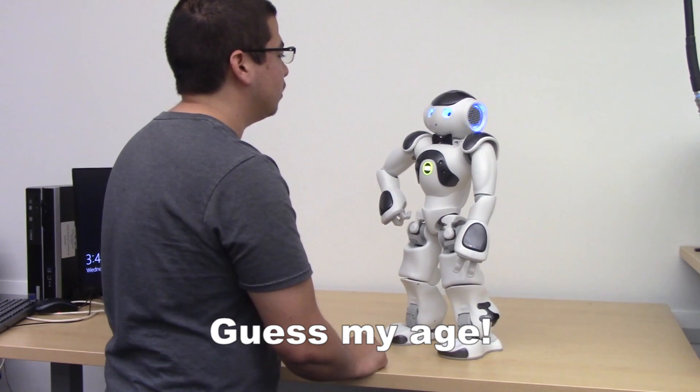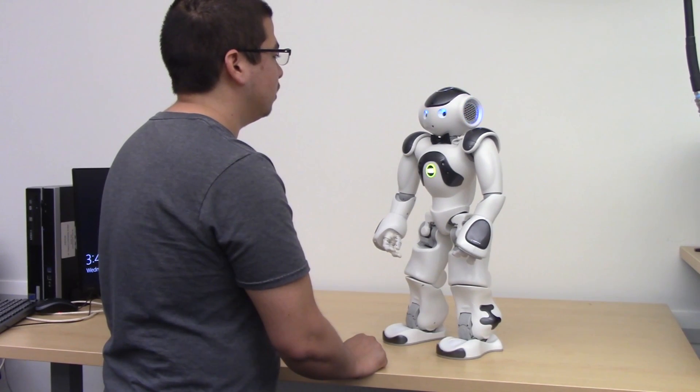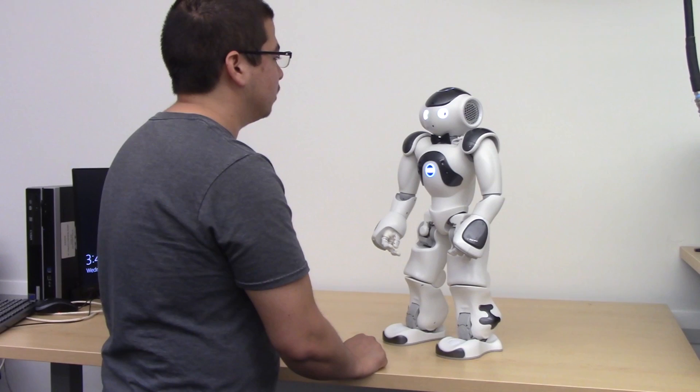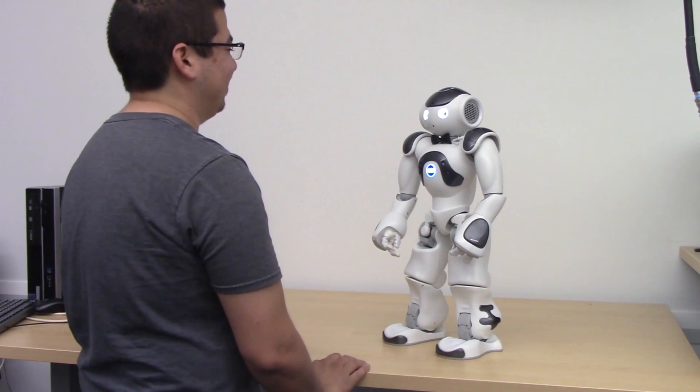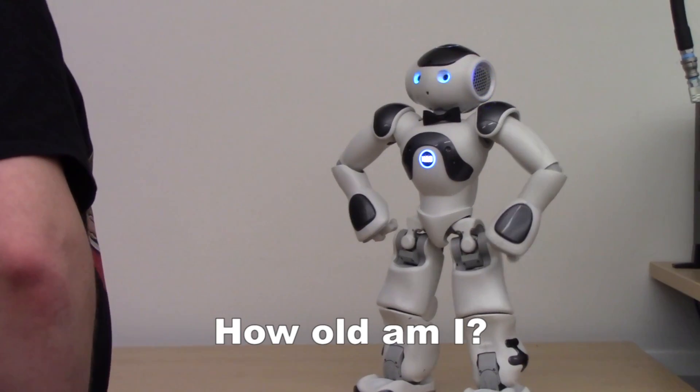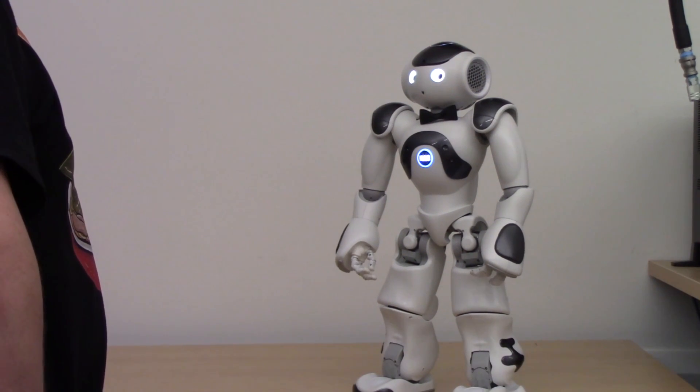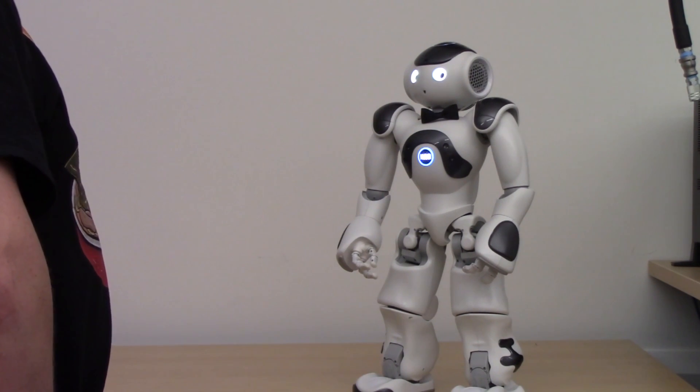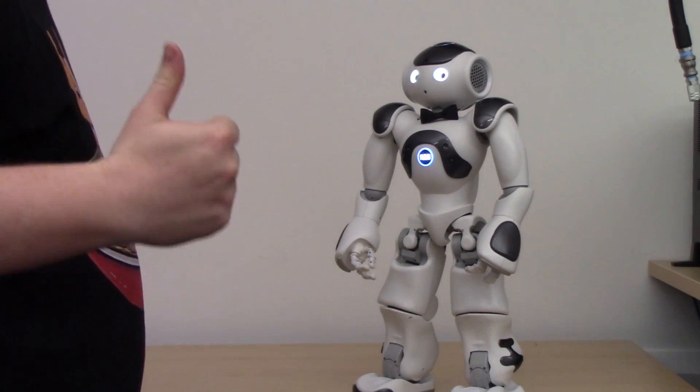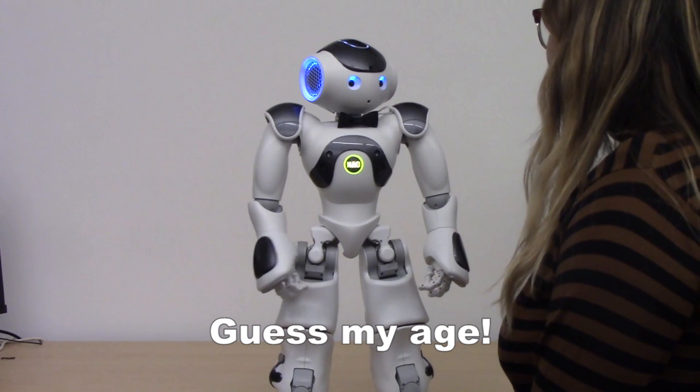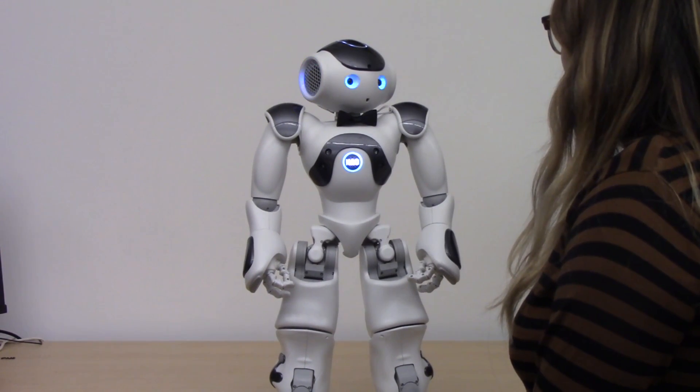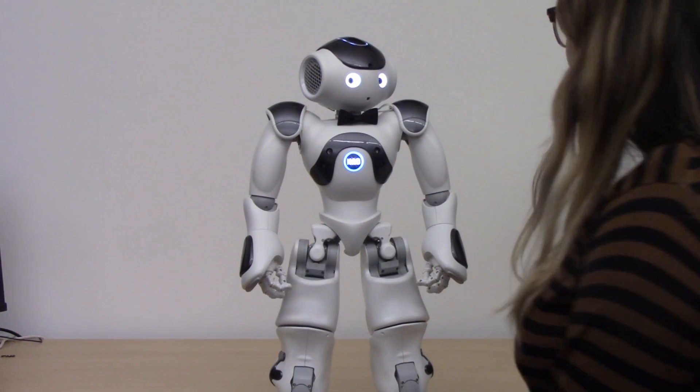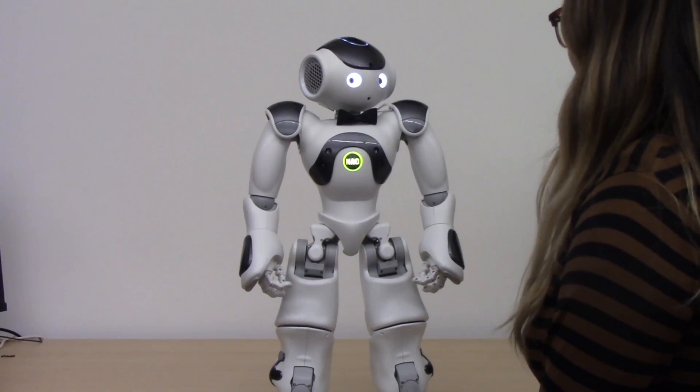Guess my age. Okay, I'm going to give my best guess. Running age analysis module. You look like you're 34 years old. Well, how close was I? How old am I? Running age analysis module. You look like you are 27 years old. How close was I? 25. Guess my age. Running age analysis module. You look like you are 25 years old. How close was I? Kind of close.